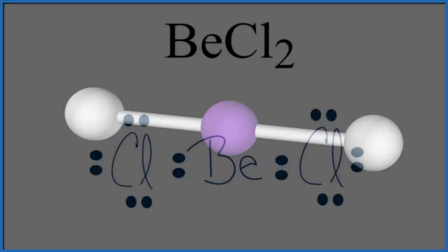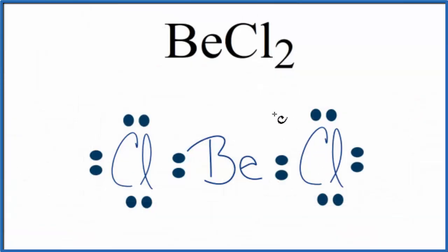Back at our Lewis structure, we can see that beryllium does not have an octet. It only has four electrons around it. That's okay. Beryllium is an exception to the octet rule, and this is a very stable form for beryllium. If we couldn't visualize that this would be linear, we could look at this table here.